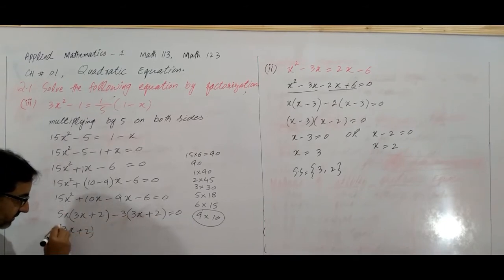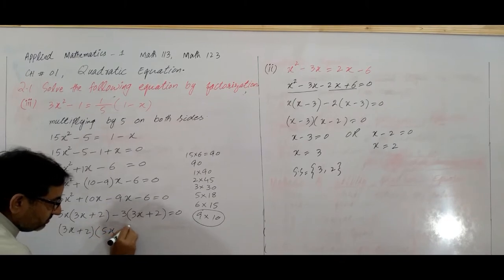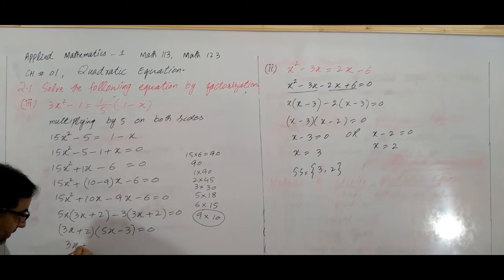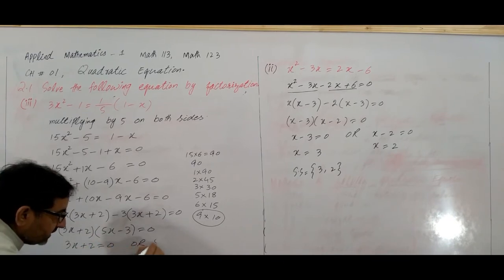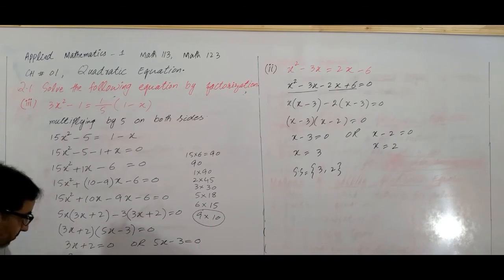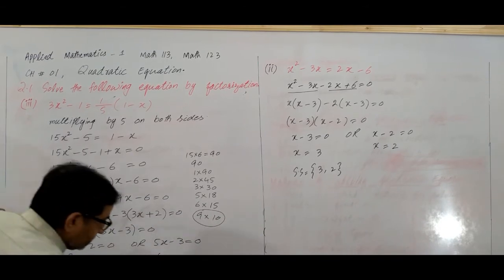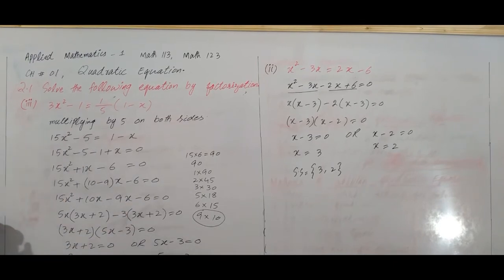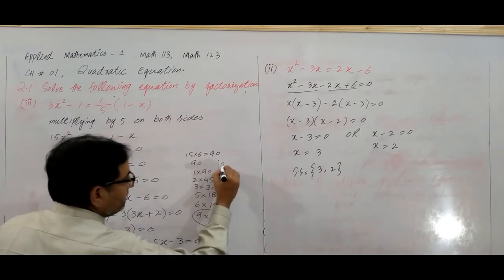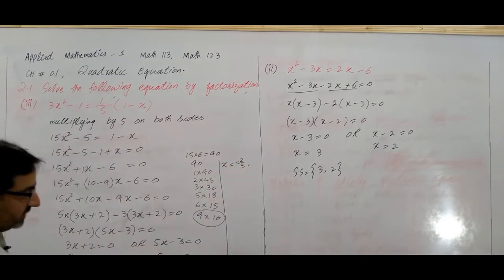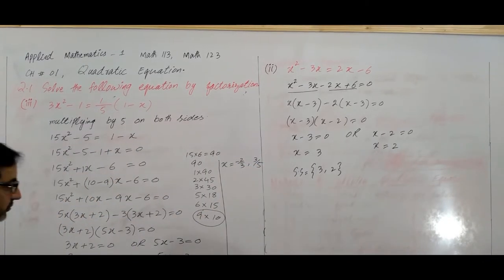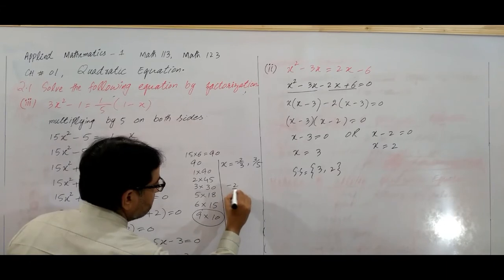Setting each factor to zero: 3x plus 2 equals 0 gives x equals minus 2/3, and 5x minus 3 equals 0 gives x equals 3/5. Solution set: {minus 2/3, 3/5}.